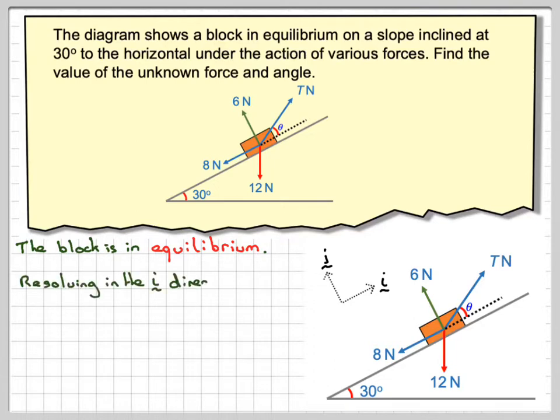So resolving in the I direction, we're going to have T cos of whatever this angle is, is going to be equal to 12 sine 30. We need this one here. If we draw this in here, minus 8. So the component here is 12 sine 30. We're going to take away 8 like we did in the previous video. And that's equal to 0. We'll call that equation 1.